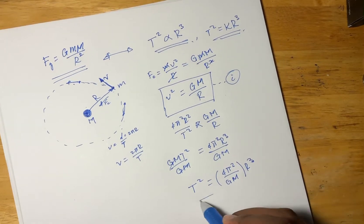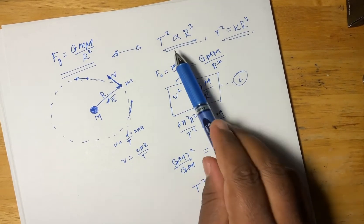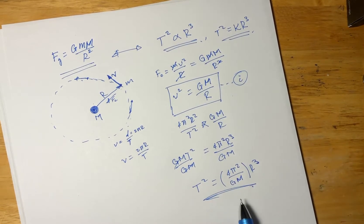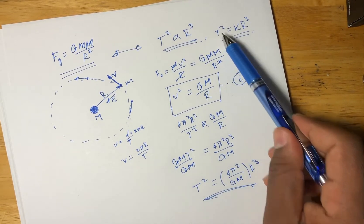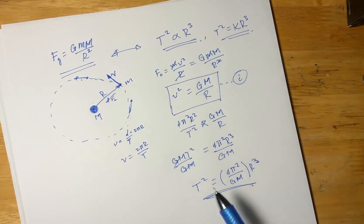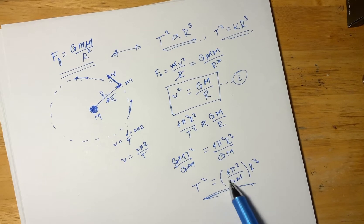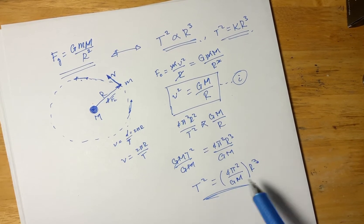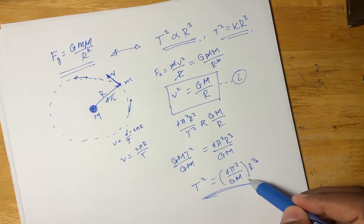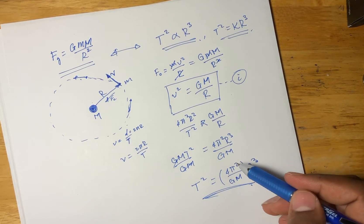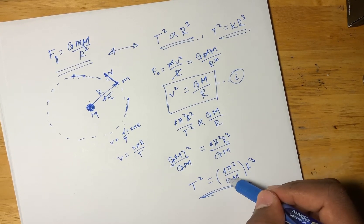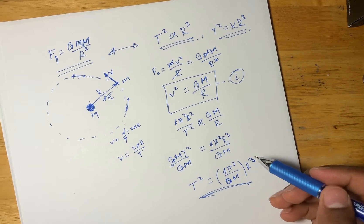Ladies and gentlemen, we have a direct proof. T² is proportional to r³. This constant — 4π² over GM — we can call the constant of proportionality, k. So T² equals k times r³.